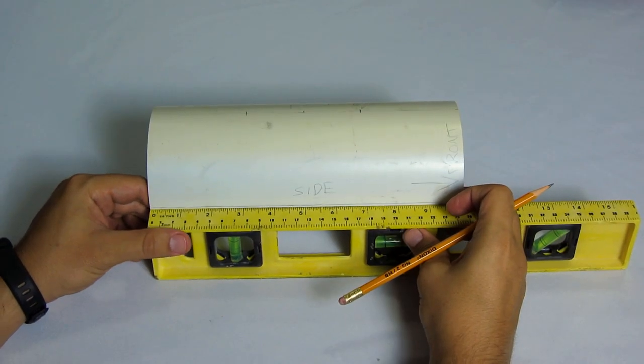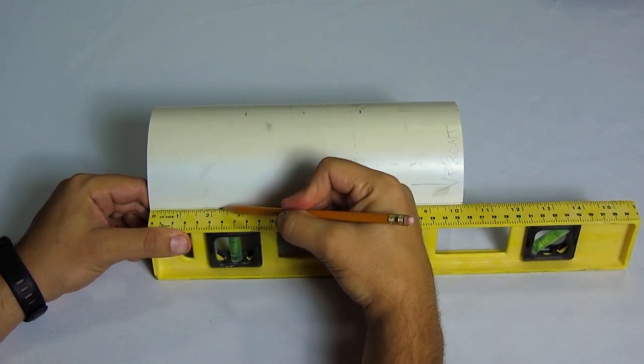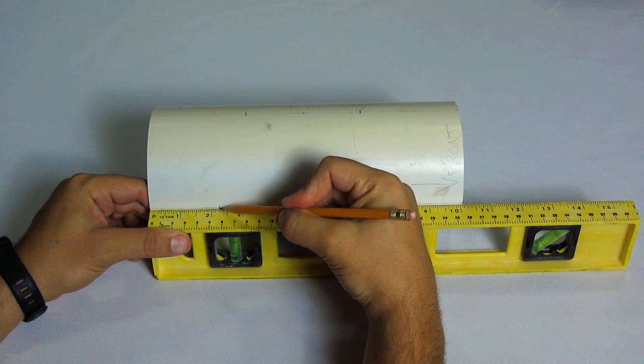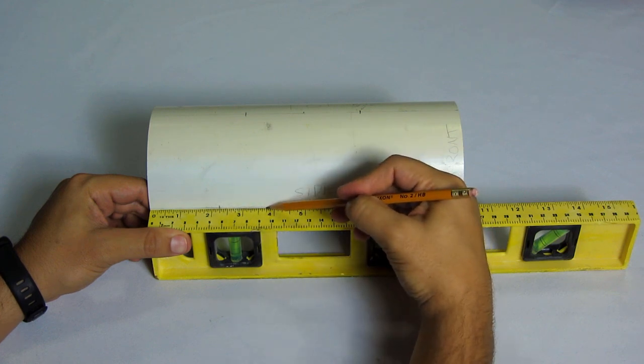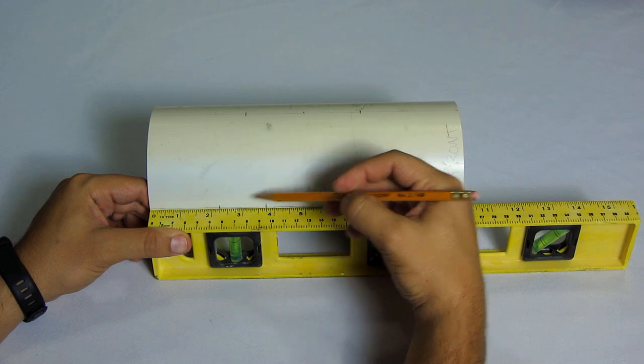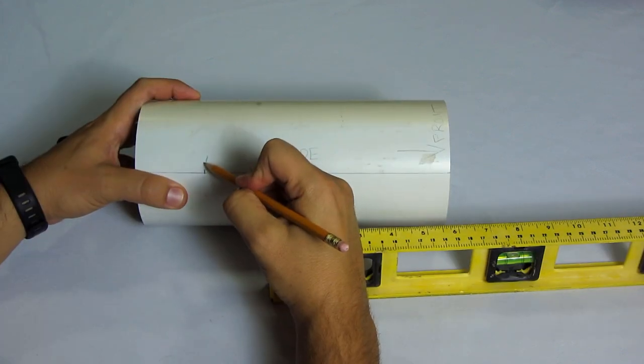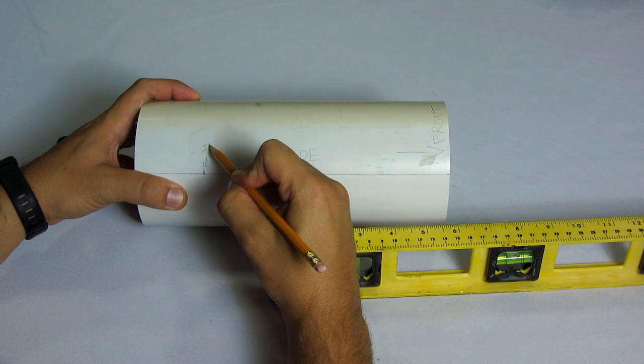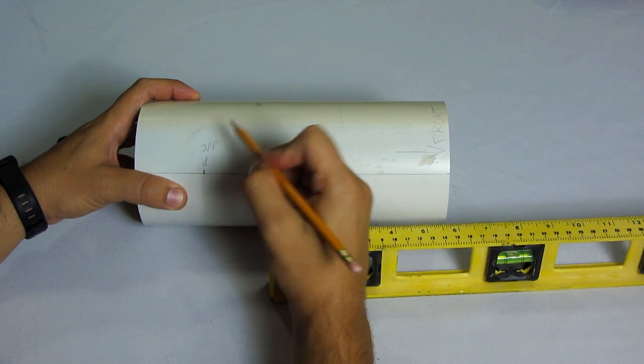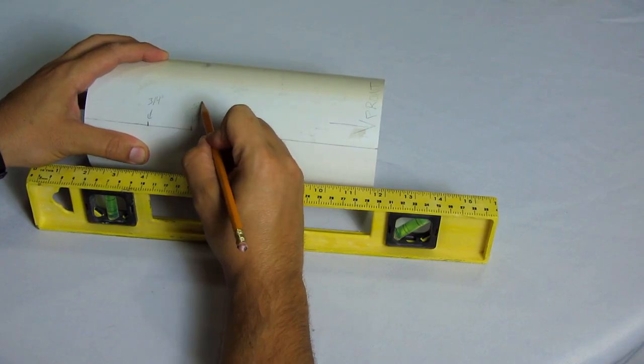Now I'll mark the side for the power switch and the potentiometer. This is fairly arbitrary, but I'm going to put the power switch at 2 1/4 inches from the back and the potentiometer 1 1/2 inches away from that. Then I'll mark the sizes on here too. The hole for the switch needs to be 3/4 inches and the hole for the potentiometer needs to be 5/16.